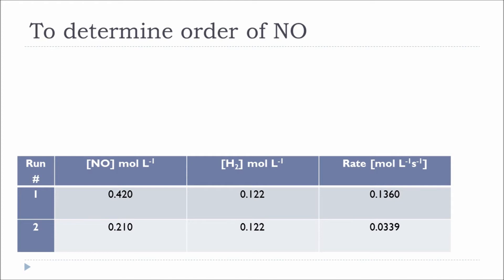We can determine the order of a single reactant by eliminating the effect of the other by keeping its concentration constant. Looking more closely: experiment 2 has a NO concentration of 0.210, and experiment 1 has 0.420 — exactly double. So we are doubling the concentration of NO. What happens to the rate? The rate changes from 0.0339 to 0.1360, which is an increase. To find the order, we take the ratio of the two experiments.